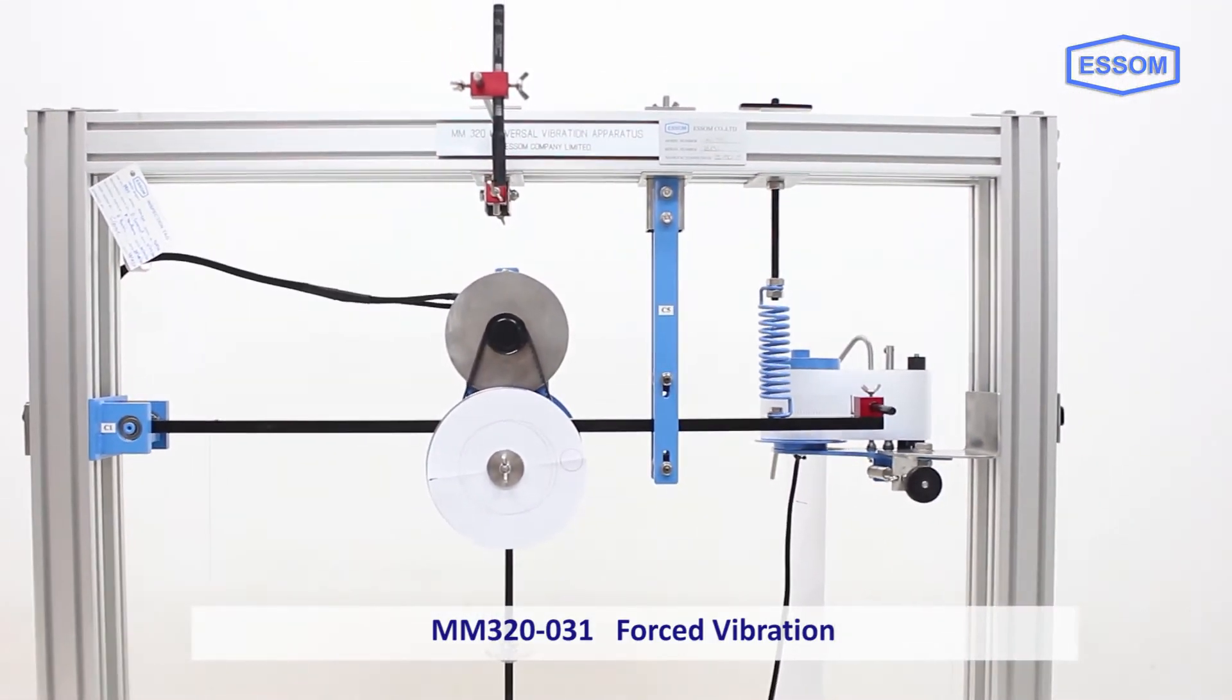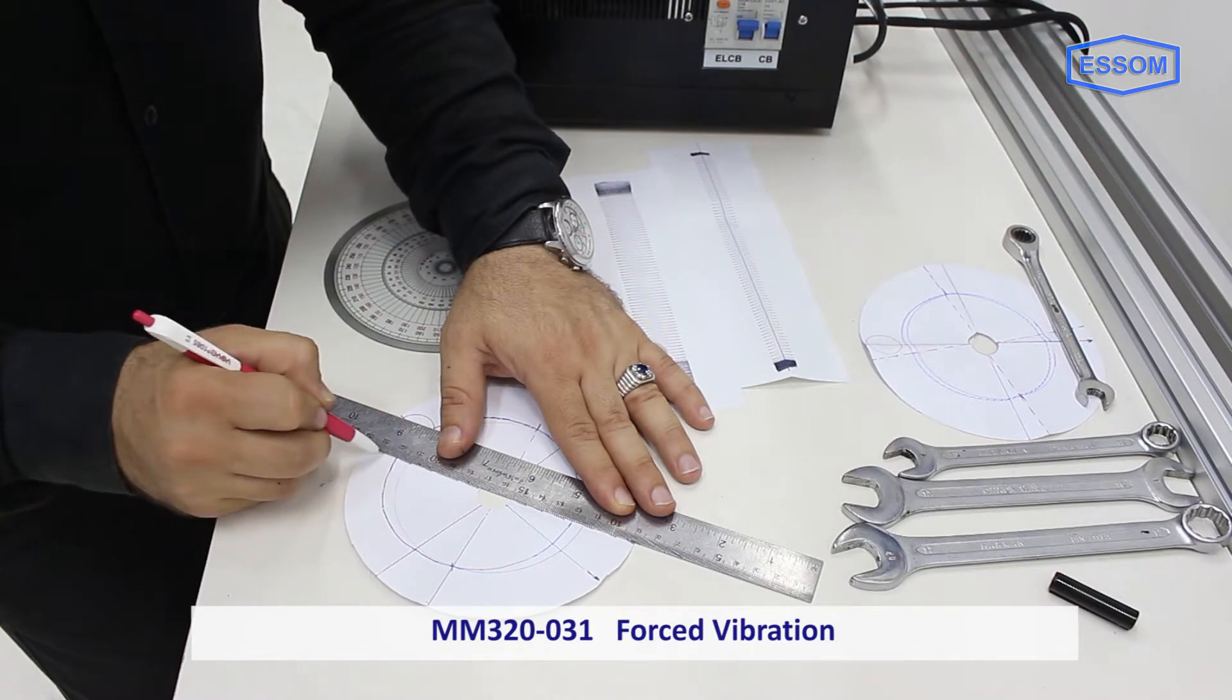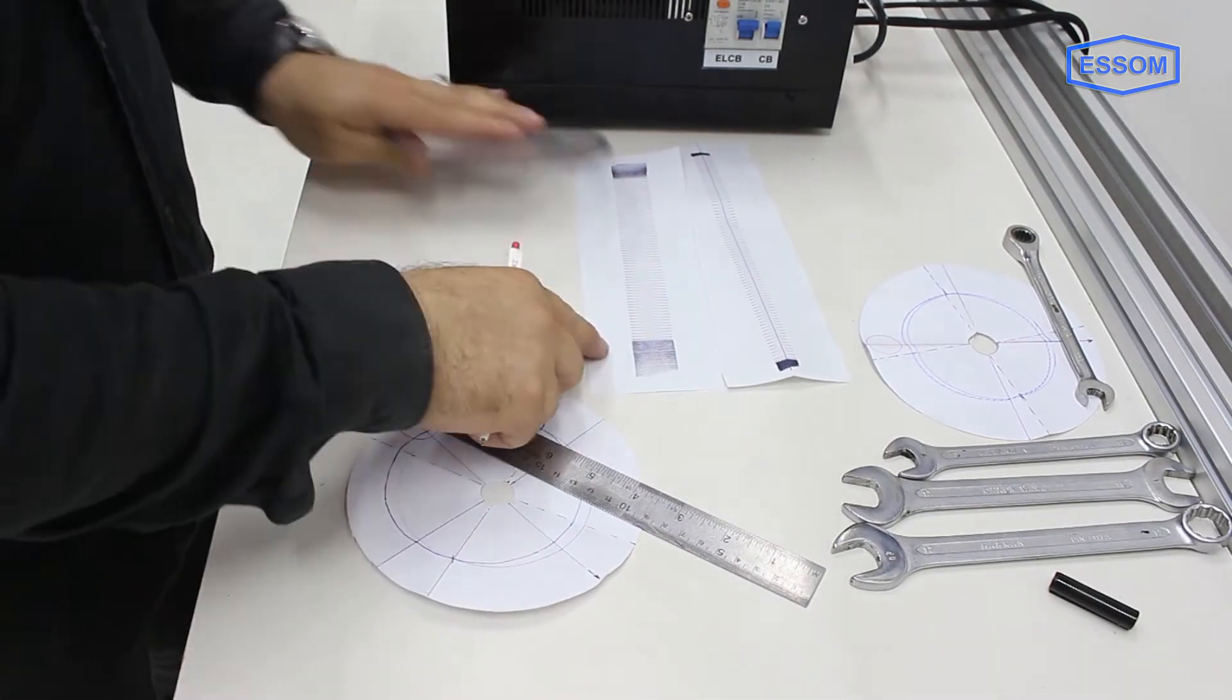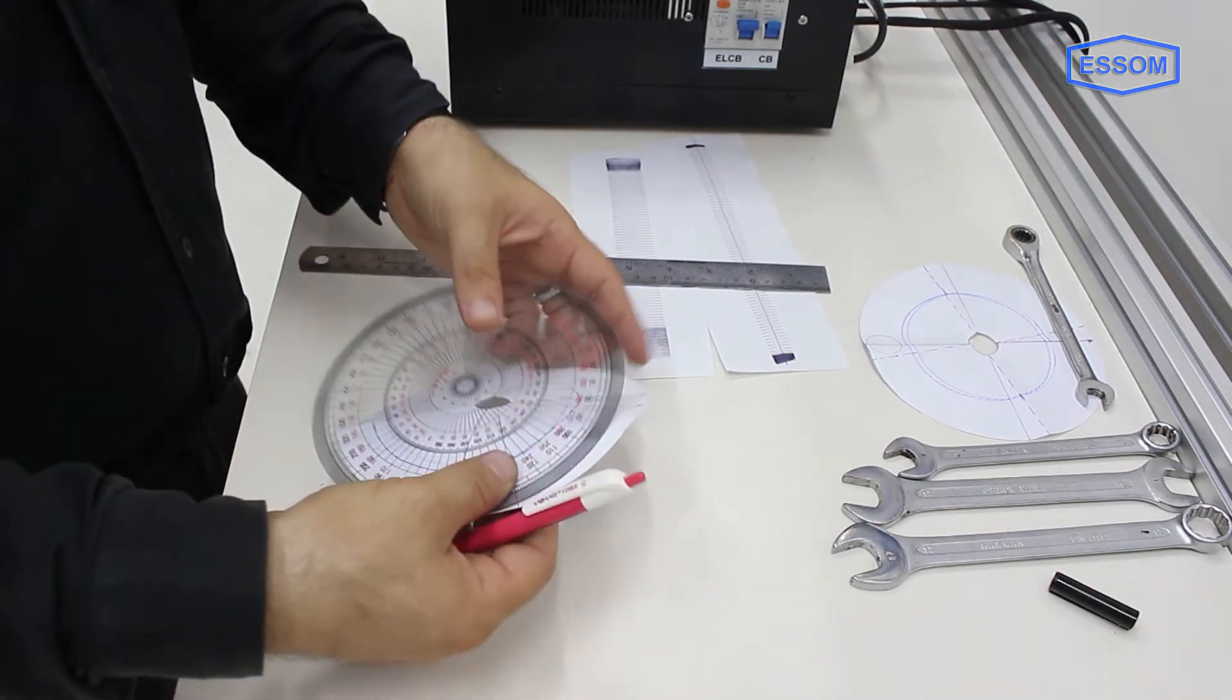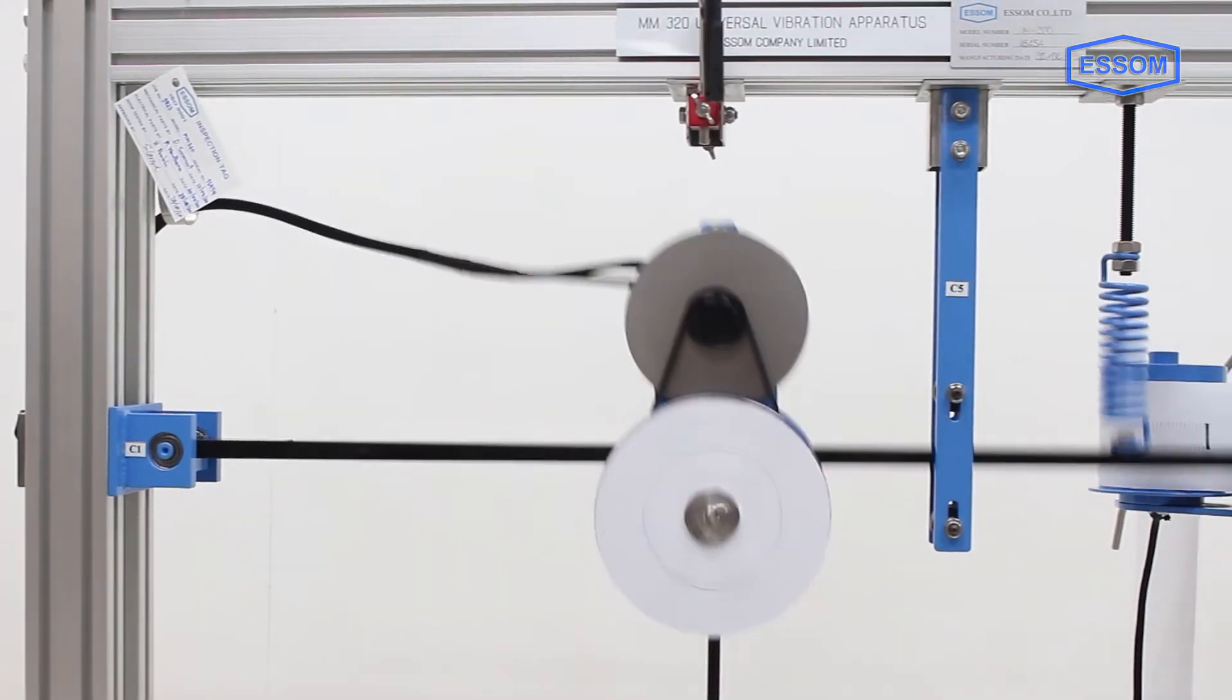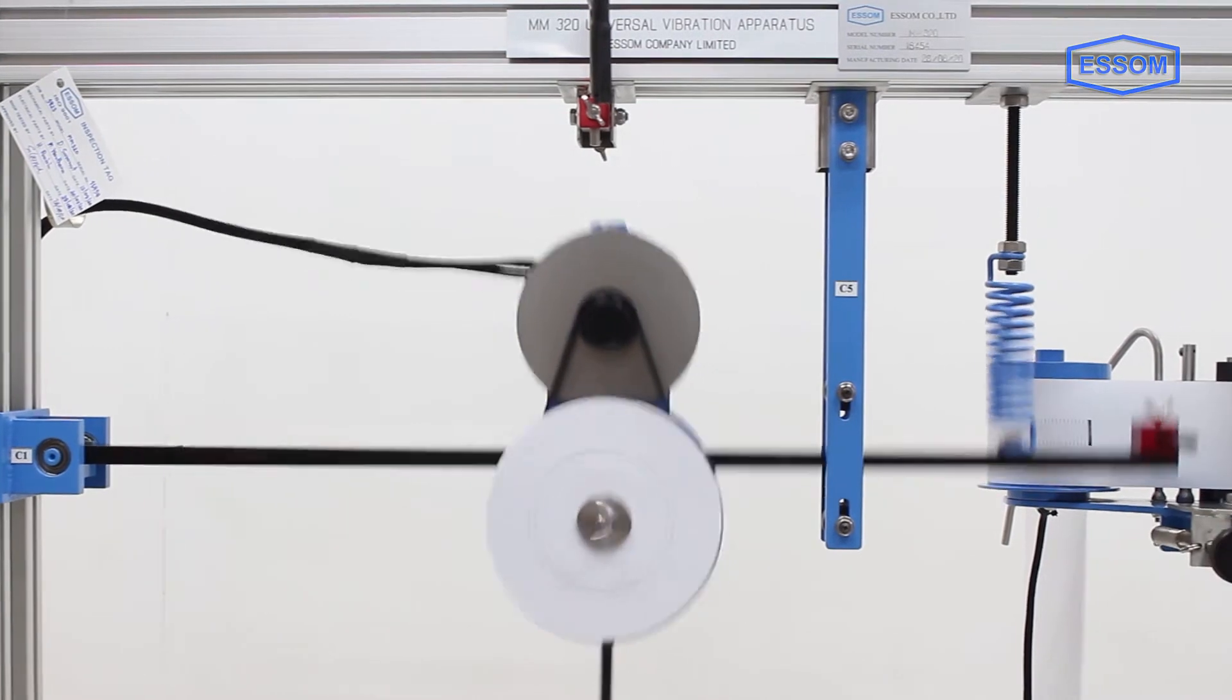SMMM 320-031 forced vibration: this is for a study of frequency ratio versus amplitude and phase angle. The apparatus consists of a beam hinged on a trunnion attached to the left vertical frame.